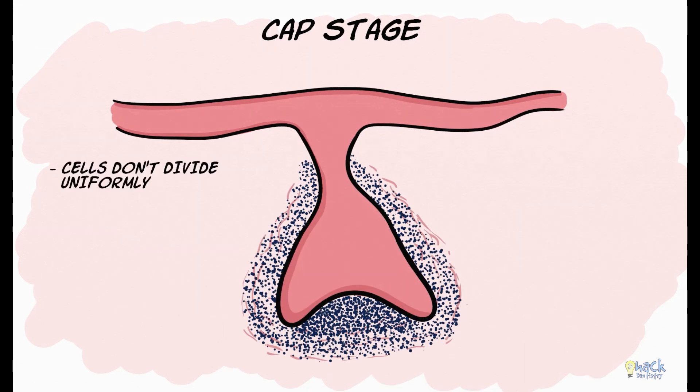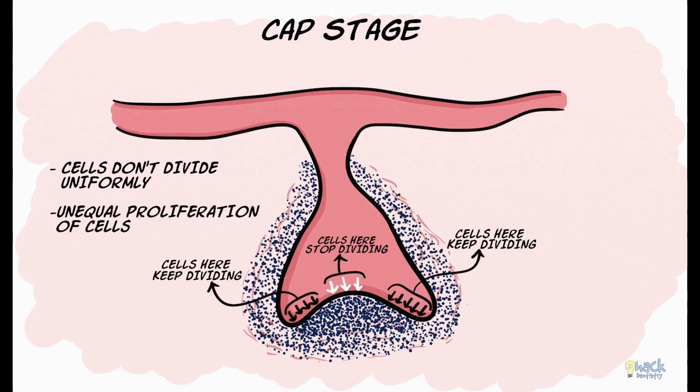The enamel organ in the bud stage comprises low columnar cells peripherally and polygonal cells centrally. Rather than all cells dividing uniformly in the tooth bud, there is differential proliferation of cells, or an unequal rate in the proliferation of cells. This leads to a concavity or an enfolding of epithelium, resulting in the bud-shaped enamel organ becoming cap-shaped.